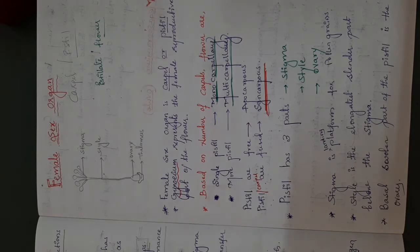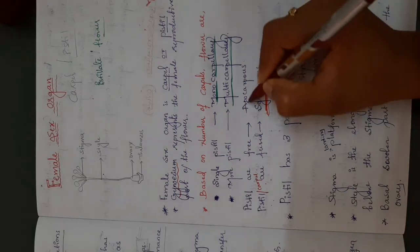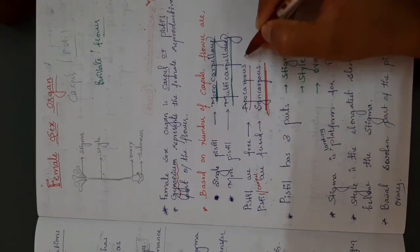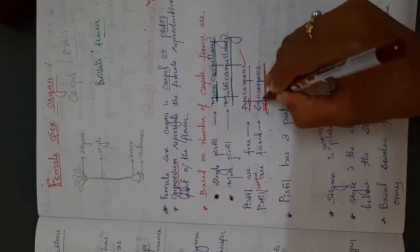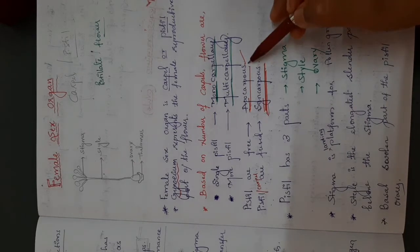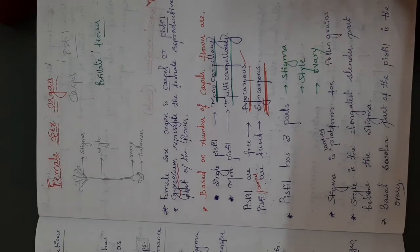In some plants, you can see the carpels are free — they are not fused. Such a condition is called apocarpous. Syncarpous means fused; apocarpous means free.